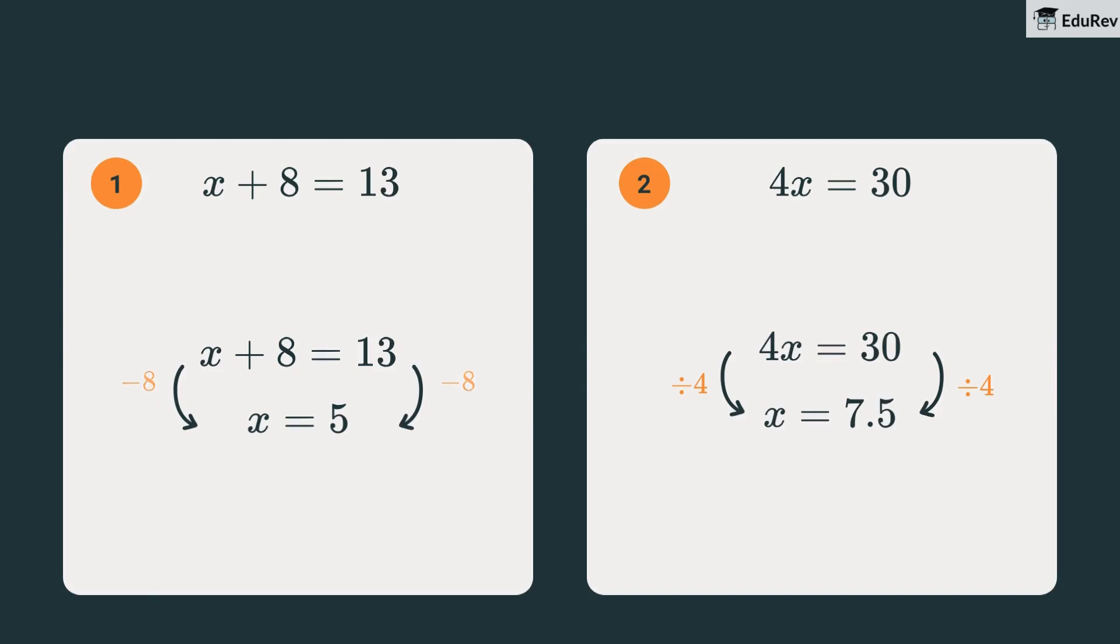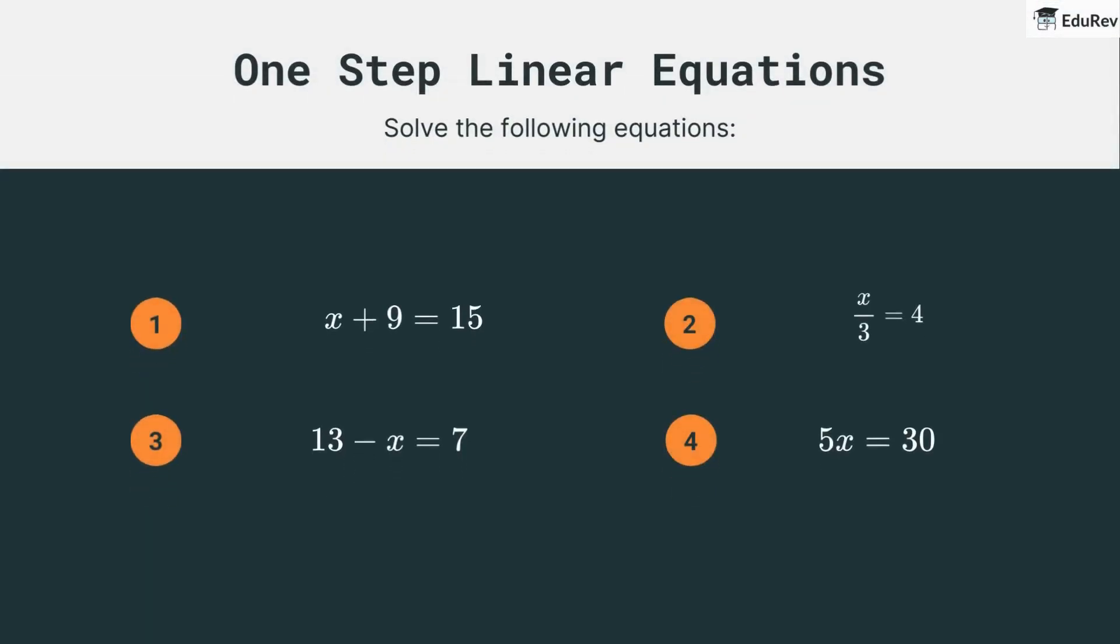Let's keep the fun going with one-step linear equations. These are just like the ones we did, but a bit different. If x plus 9 is equal to 15, and there's another one where 13 minus some number equals 7, plus a few more. Time to see if our answers match.